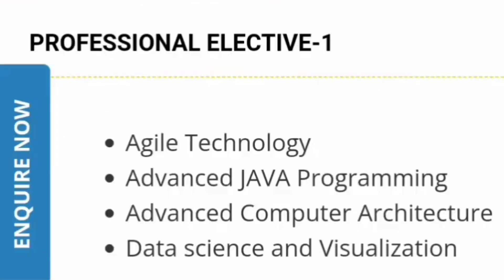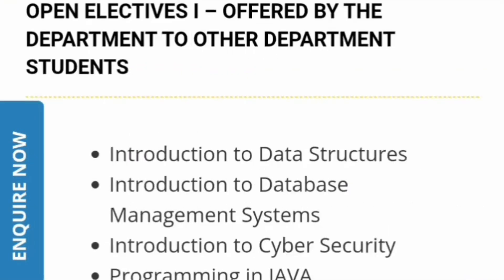Under professional elective one, you have to choose from options like agile technology, Java programming, advanced computer architecture, or data science and visualization. Based on your fixed subjects, you can select optional subjects like these. From the open elective side, there are options such as data structures, DBMS, cyber security, and programming in Java — you can select one of those.